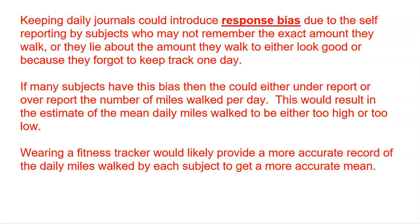If a lot of people overestimate by bragging about how many miles they walk, we'll get values that are too high. Or if people give numbers that are really low, that creates an underestimate. Wearing a fitness tracker would likely provide a more accurate record of the daily miles walked by each subject to give a more accurate mean. You could still find things wrong with the tracker — maybe someone put it in their car — but recording it on your own causes a lot more bias. Making subjects wear a fitness tracker is one step closer to getting more accurate results.